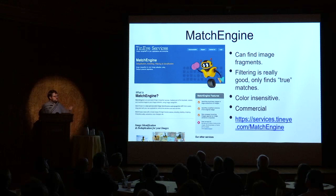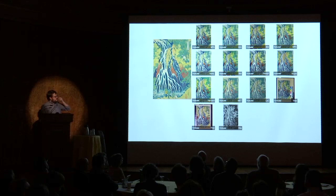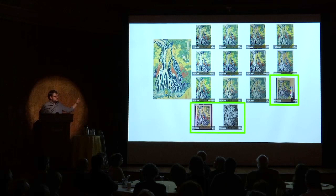Around that time I reached out to TenEye and they have a commercial service called Match Engine. I told them about the project and they let me use their service. It's really, really good in that it was able to find image fragments. For example, this is a print by Hokusai — a Waterfall — and you have many different copies from different institutions, but the quality of the images varies: some are black and white, some are surrounded by color bars, and it's still able to find the matches.